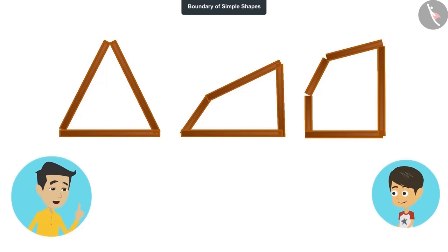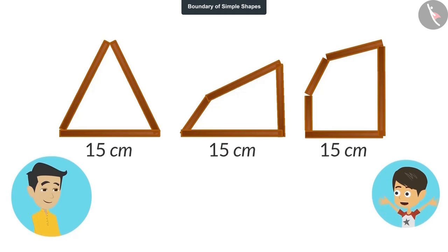Now there are three such figures in front of you that are made from sticks of equal lengths. Can you tell the length of their boundaries? Yes, it is very easy. Sticks of 15 centimeters each have been used to make all the three shapes. So the length of their boundaries will also be the same. That is 15 centimeters.